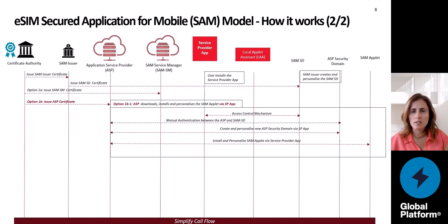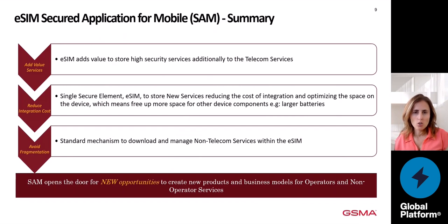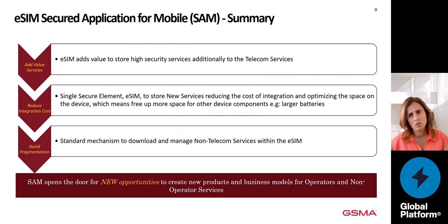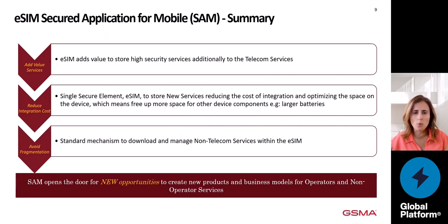These two flows illustrate how flexible the SAM technology is going to be for the service provider. The service provider will be able to select one model or another based on different market needs. To summarize the key learnings: first, the eSIM will add value by being able to store high-security services in addition to the telecom services we have today. Thanks to the SAM technology, we will have a single secure element — the eSIM — to store new services, which will reduce the cost of integration and optimize space on the device, meaning we can free up more space for other device components, for instance larger batteries. Finally, the SAM technology will provide standard mechanisms to download and manage non-telecom services installed inside the eSIM. SAM opens the door for new opportunities that we hope will create new products and business models for both operator and non-operator services.